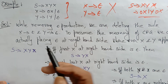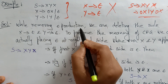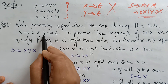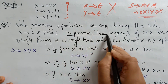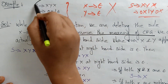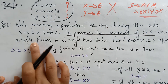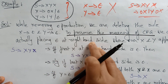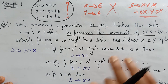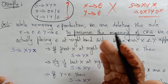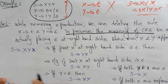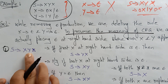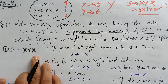While removing epsilon productions, we are deleting the rules X determines Epsilon and Y determines Epsilon. To preserve the meaning of the context-free grammar, we are actually placing Epsilon at the right-hand side wherever X and Y appear. Then we get some new productions and in place of Epsilon we write those productions. Let me take the first production S determines XYX.